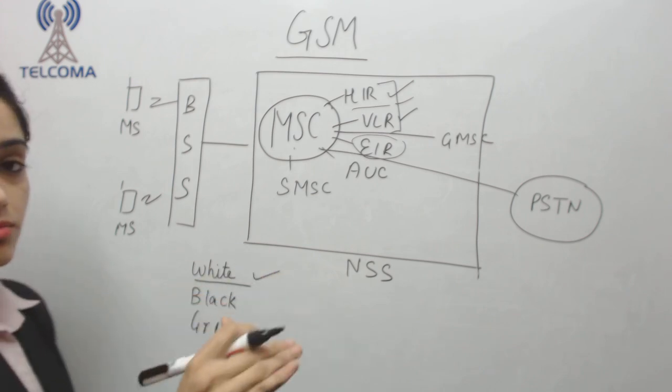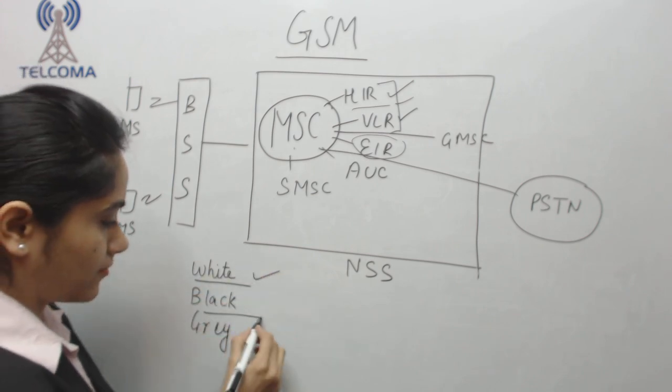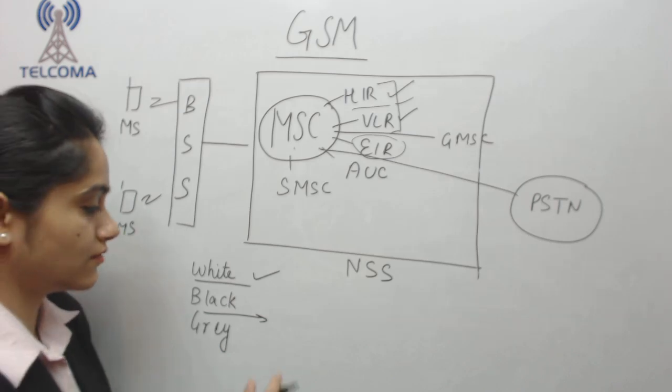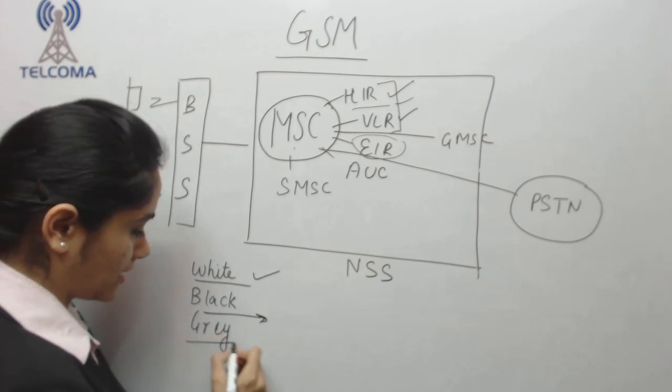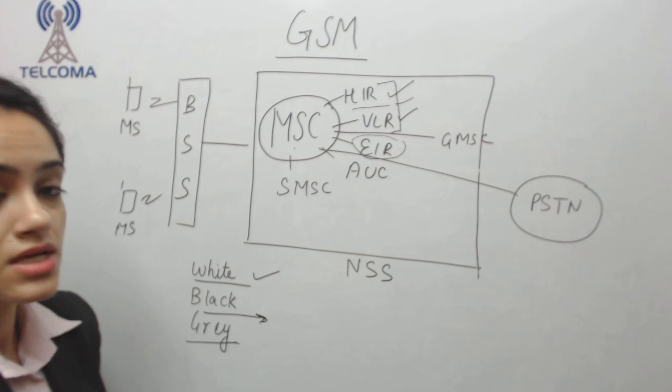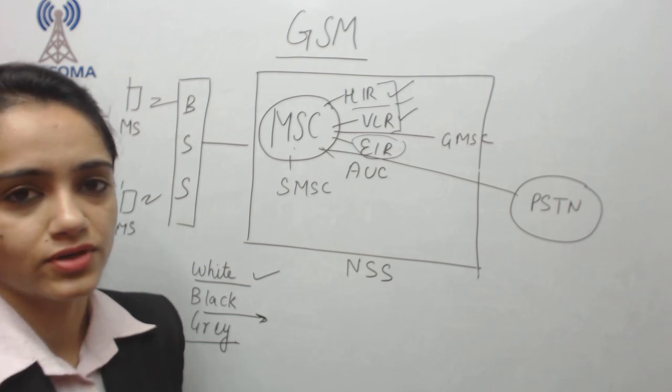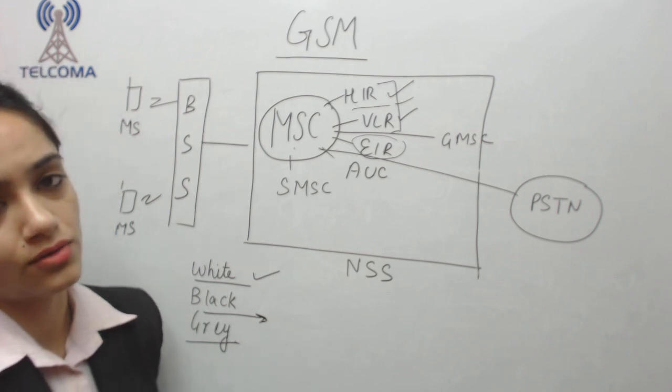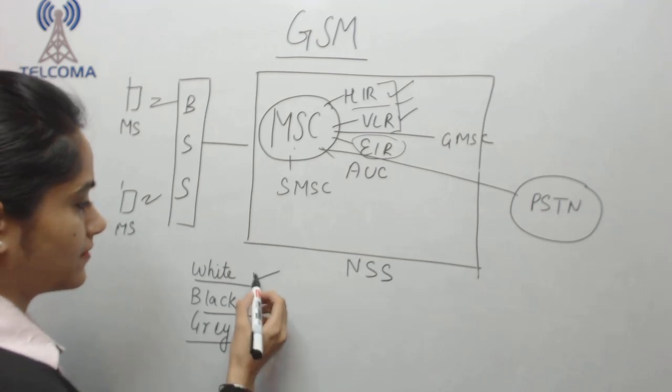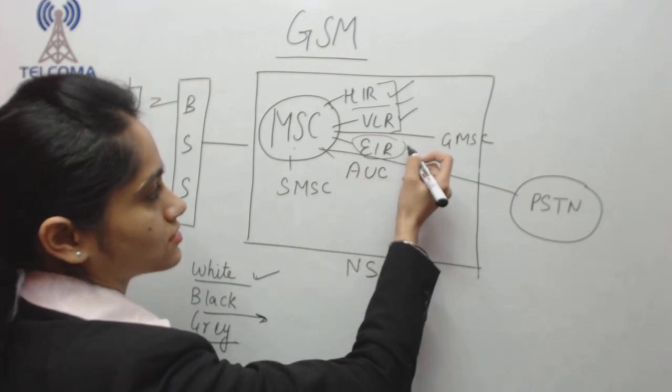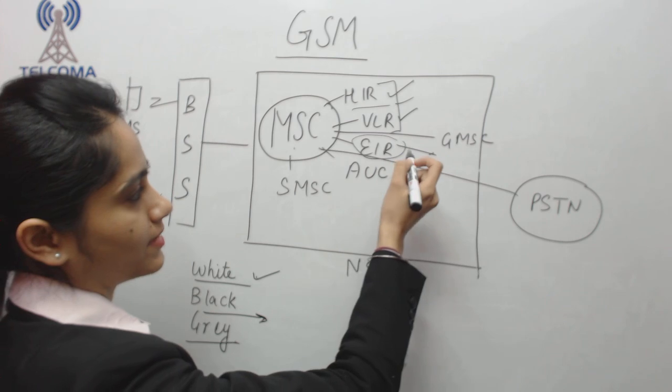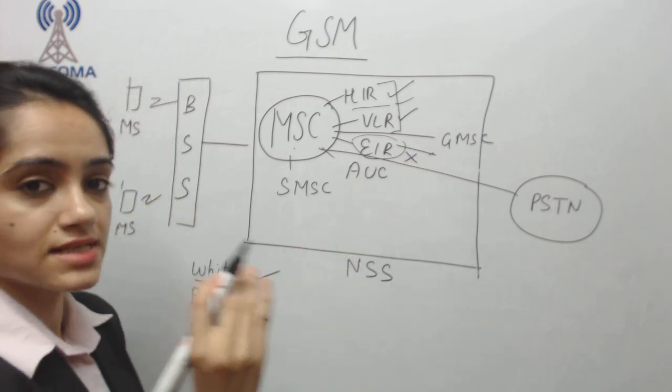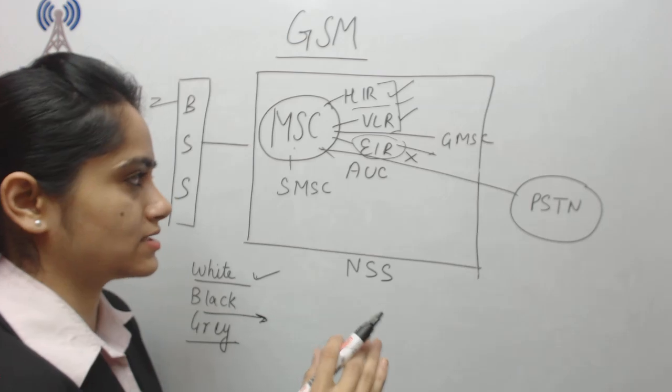White list has all the normal users. Black list are the blacklisted users with which there will be no processing of the call. And gray list will be for service denied users. For example, incomings are blocked or outgoings are blocked. So we have, if you are a white user, then it will pass you. If you are a blacklist, it will block you. If you are gray list, then it will check the service and accordingly it will pass.